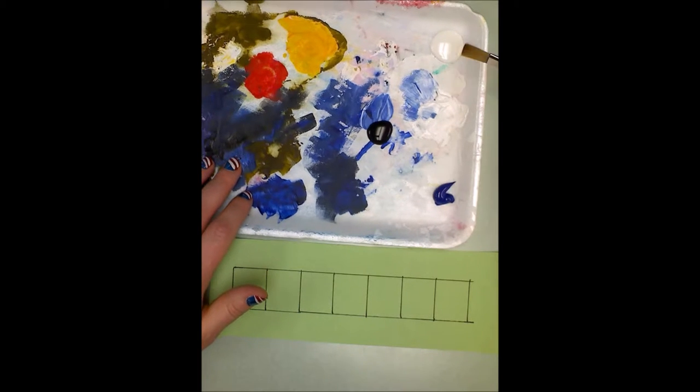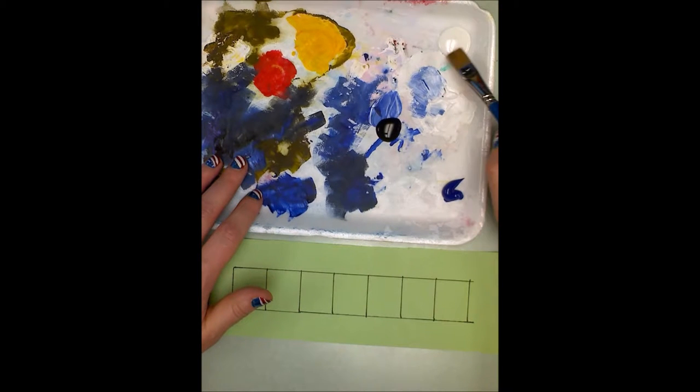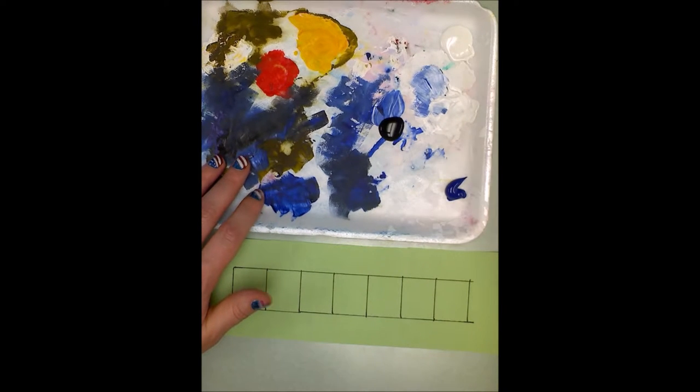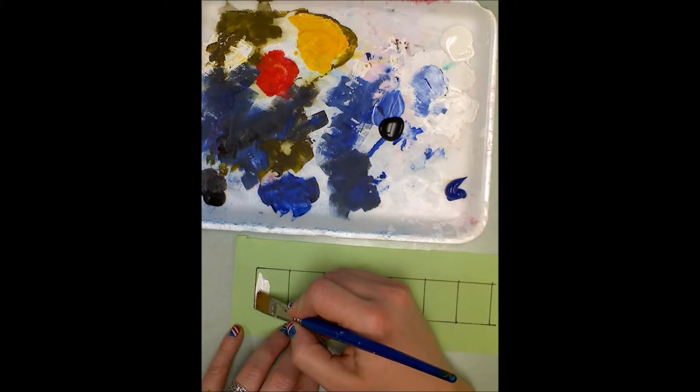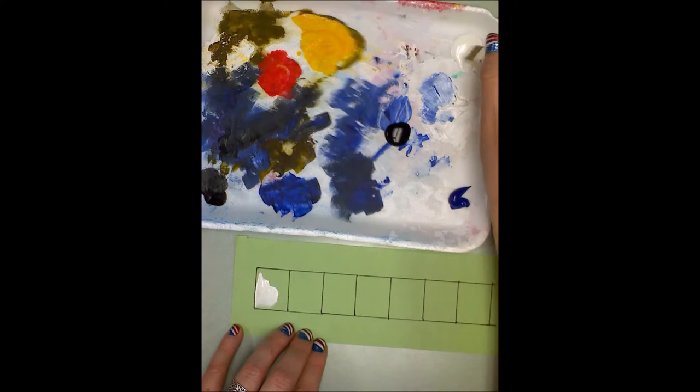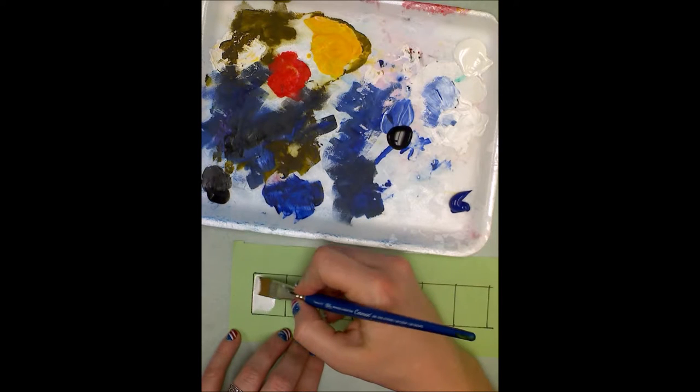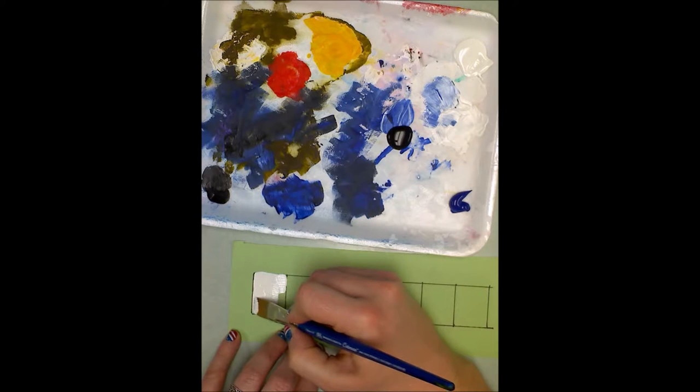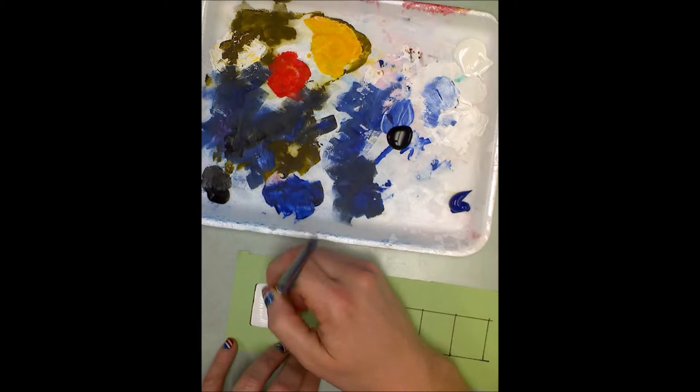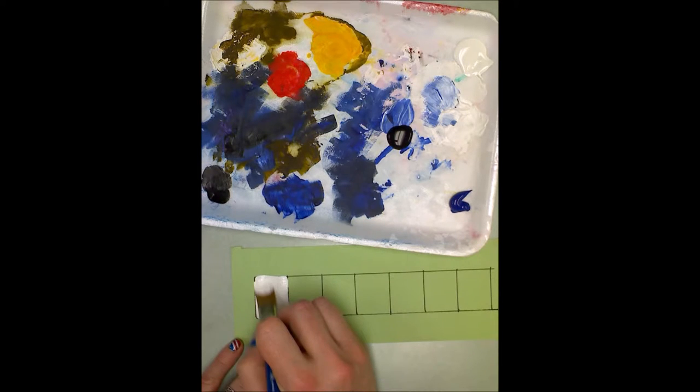I'm actually going to start with white first. I'm going to start with the white because I want that nice and pure. I don't want anything getting into it. I'm going to start on the left-hand side because I am right-handed and I don't want to get my hand, my arm, to get dragged through my paint. Focus on your craftsmanship. Try to make sure you stay inside your lines but if you don't it's not the end of the world. This is just a practice. Okay but do your best.